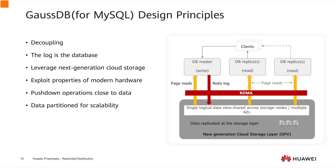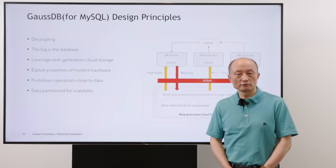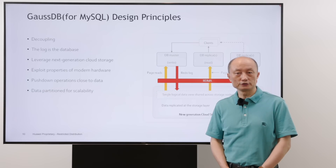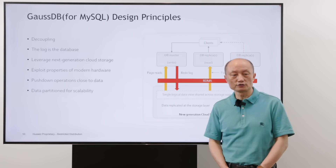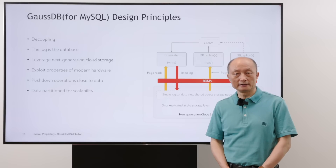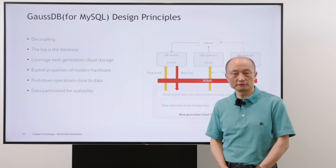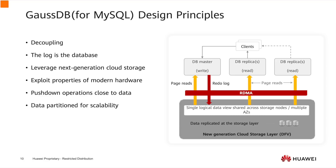The second principle is log is the database. The compute node writes only logs to the storage, no page flushing, which significantly reduces the network traffic. Third, leverage next-generation cloud storage. The durability and data replication are done in the storage layer, which is highly reliable and has many enterprise features, including auto-healing and flexible consistency.